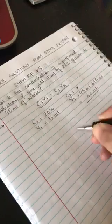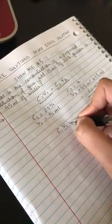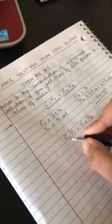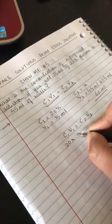So your V2 would be actually 45 ml plus 15 ml, that gives a total of 60 ml.